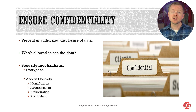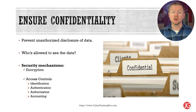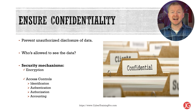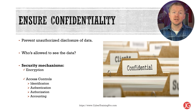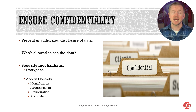With access controls, there are a few important concepts you need to understand. First, we start with identification of a user by asking for their username. Next, we ask the user to perform authentication by providing their password. Finally, we provide authorization, granting certain permissions so the user can access certain files and folders. This whole process creates an audit trail known as accounting, so we can recreate that timeline if needed. That completes the IAAA process.